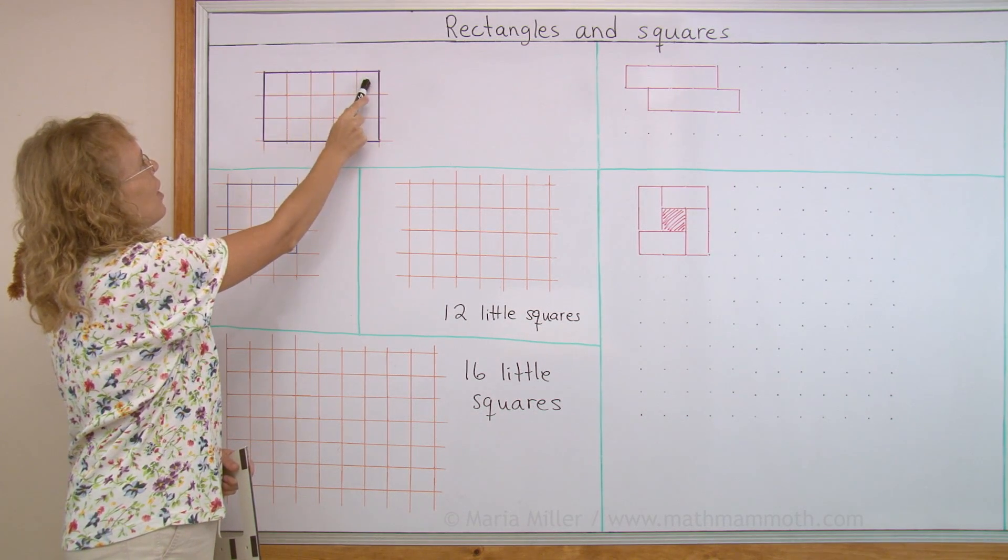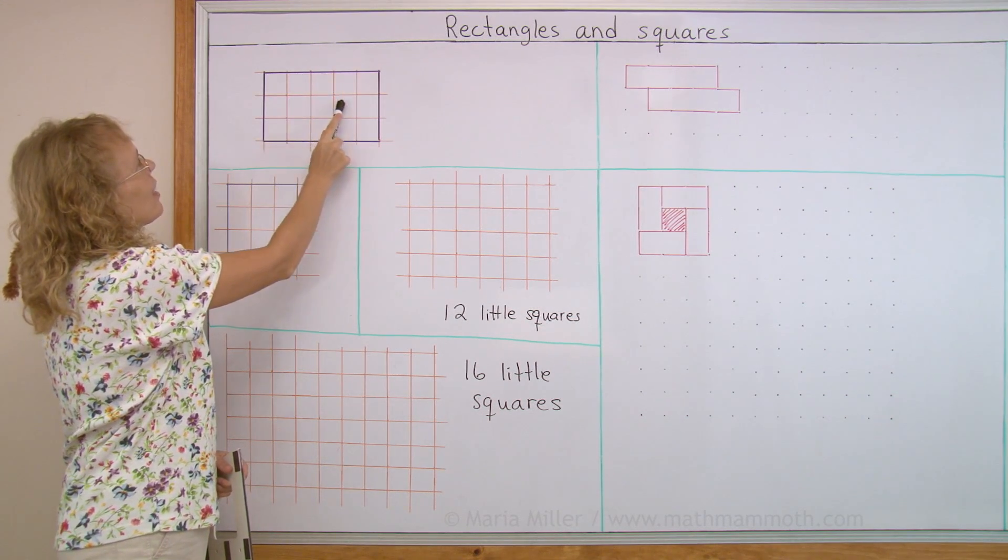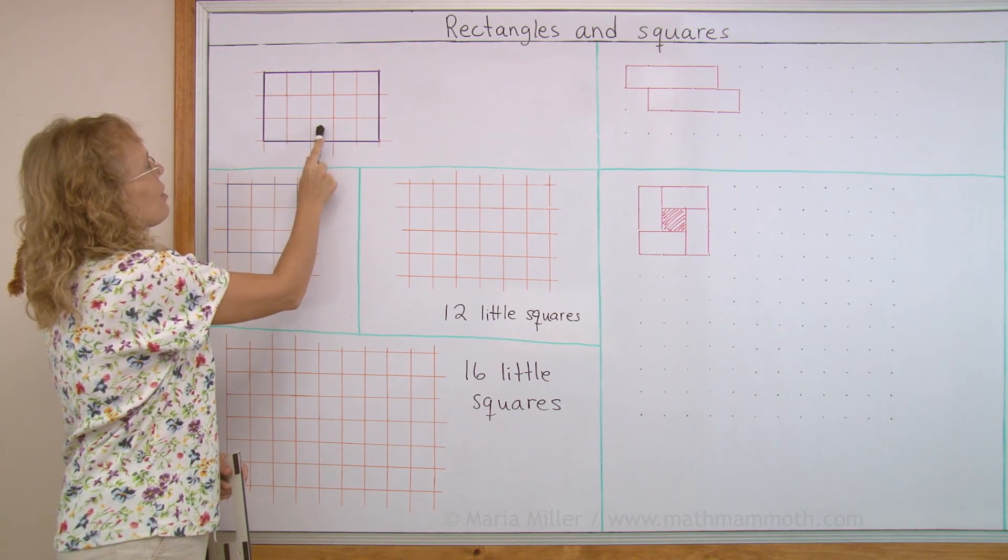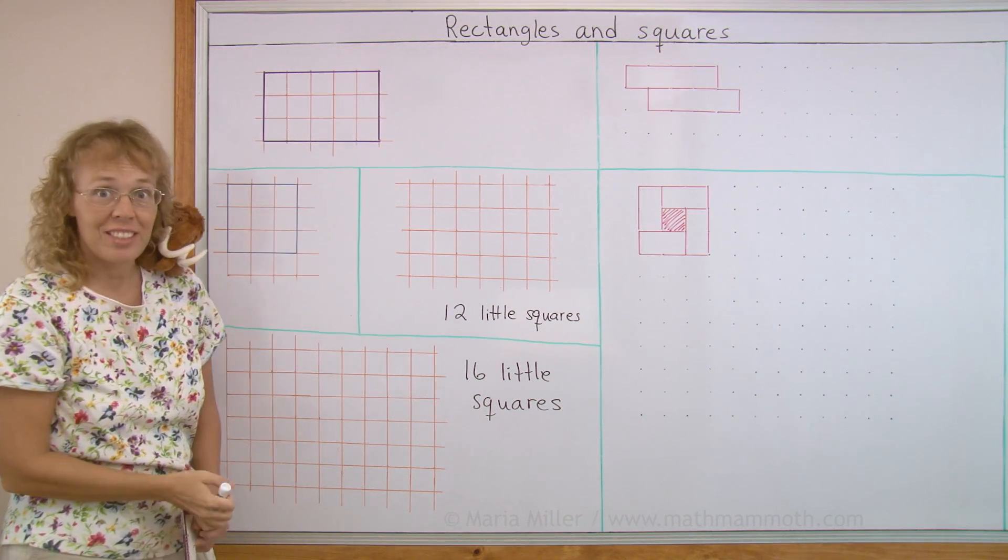1, 2, 3, 4, 5, 6, 7, 8, 9, 10, 11, 12, 13, 14, 15. 15 little squares.